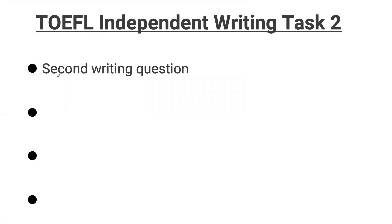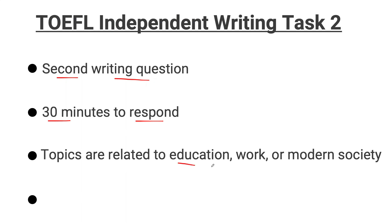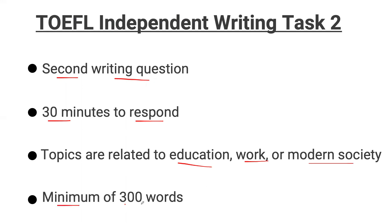Independent writing task two is going to be your second writing question in the writing section. You're going to have 30 minutes to respond, and I include the planning stage, the writing stage, and also the revision stage in that 30 minutes. Your topics are related to education, work, or anything in modern society. For word count, you want to have at least a minimum of 300 words — that is what TOEFL states as an effective answer. You don't want to go over 400, so just make sure you're at your marker of 300 words.